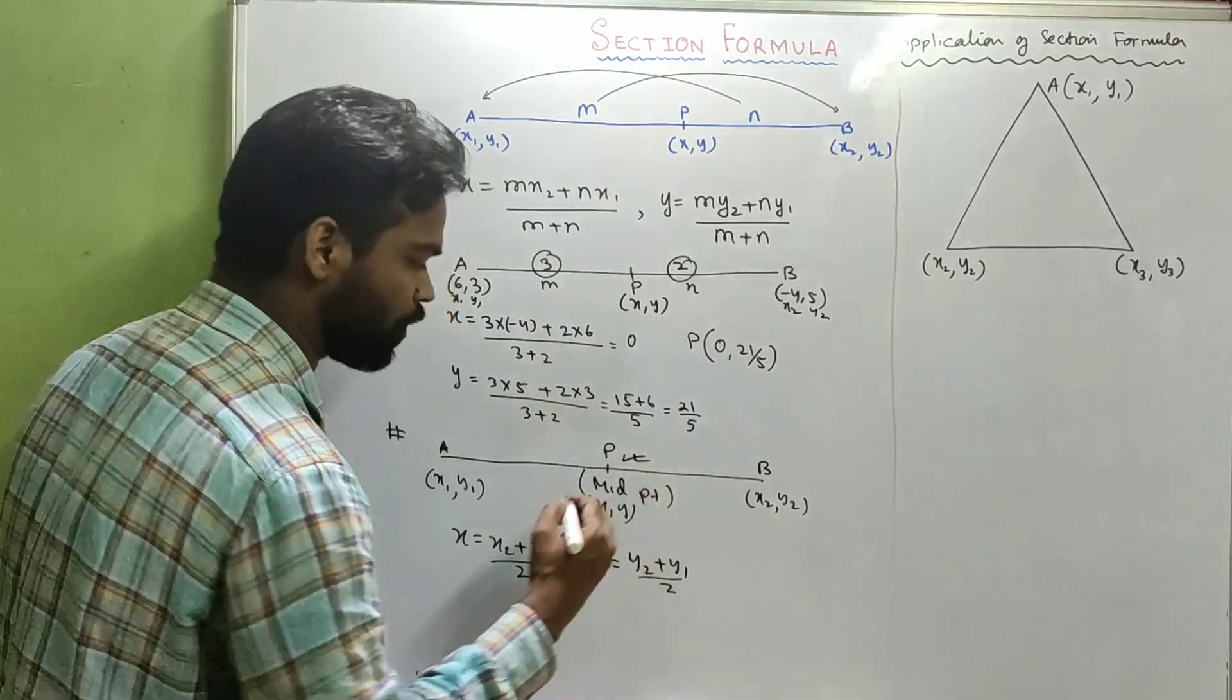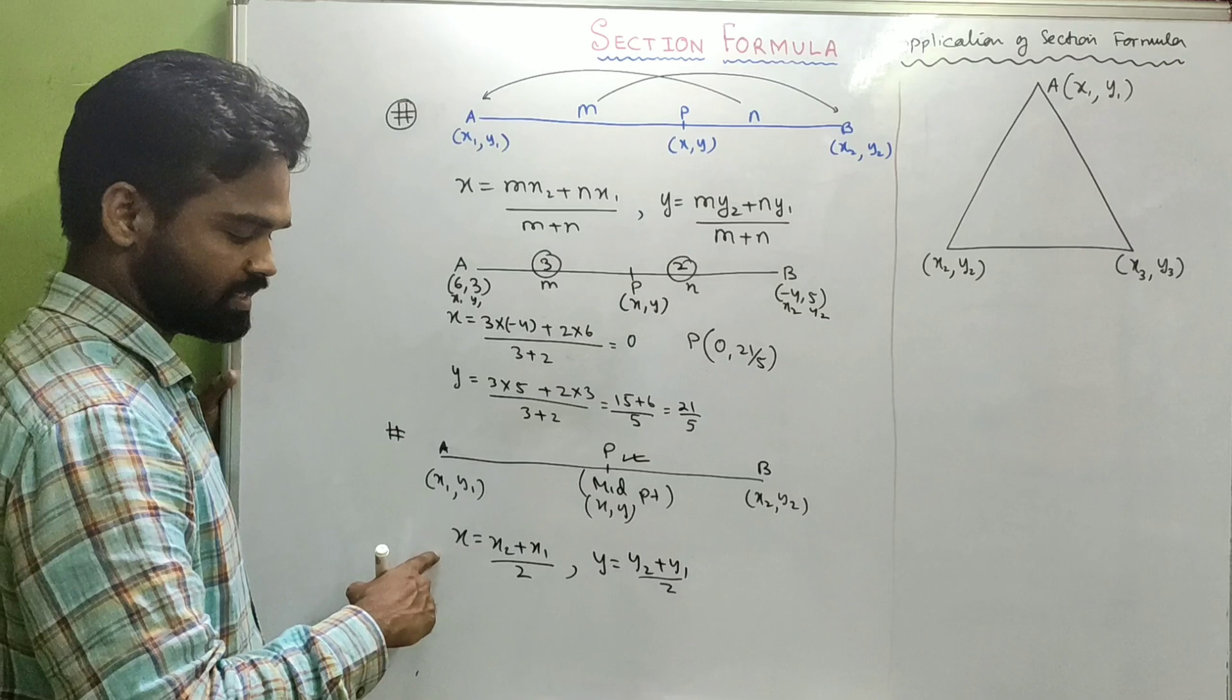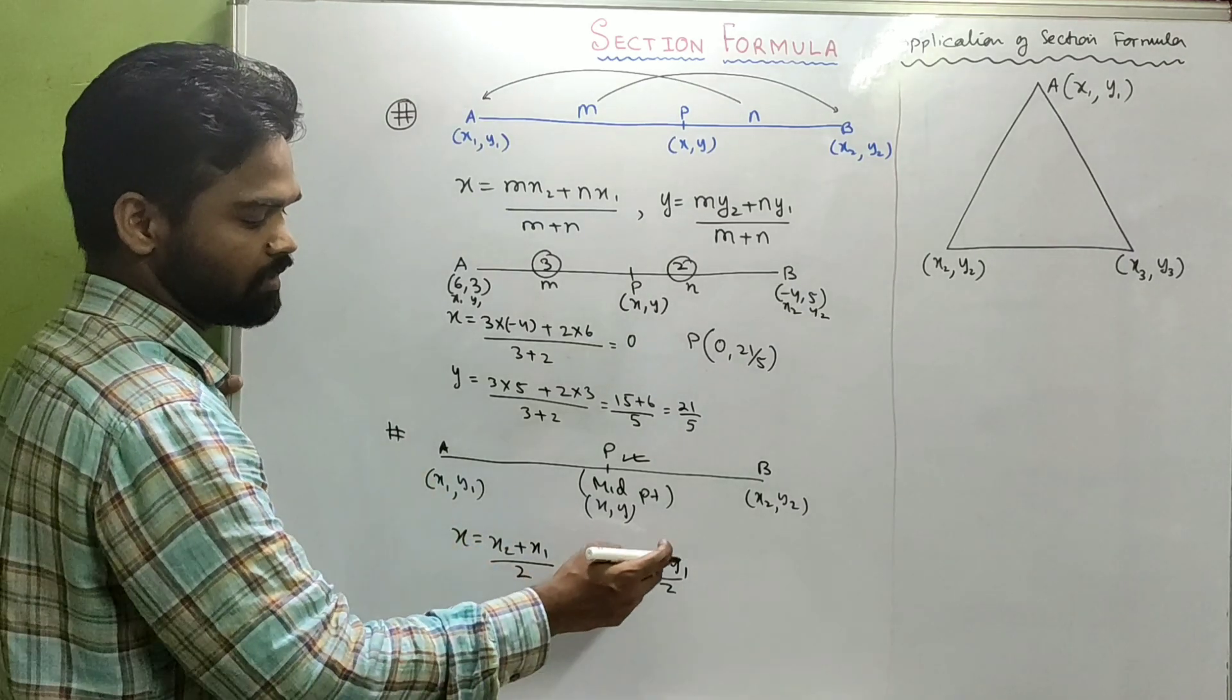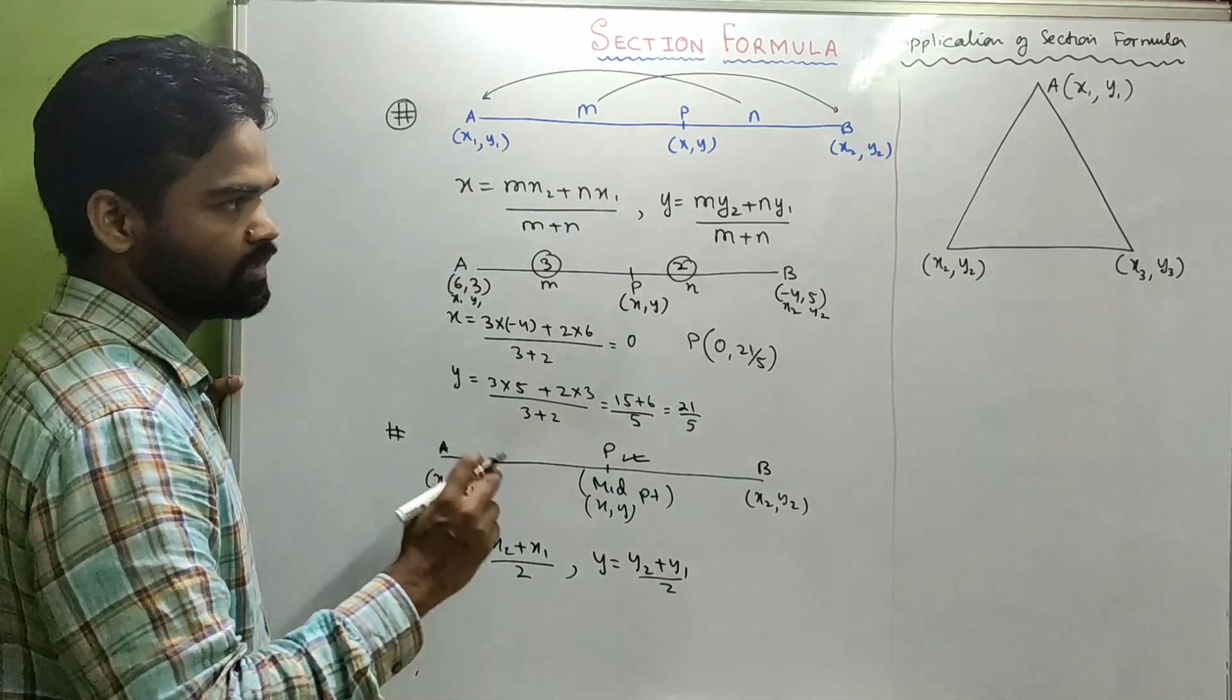So, the coordinate of the midpoint of a line segment is X equals X1 plus X2 by 2, and Y equals Y1 plus Y2 by 2.